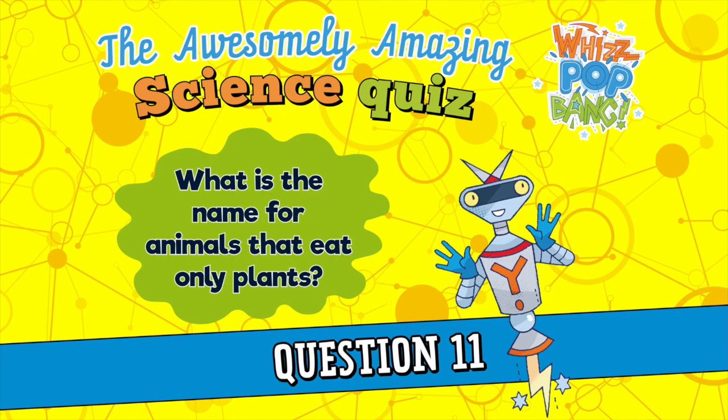Question number eleven. What is the name for animals that only eat plants? Question number twelve. Which type of blood cells carry oxygen around the body?